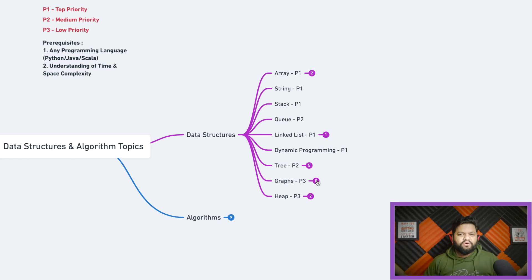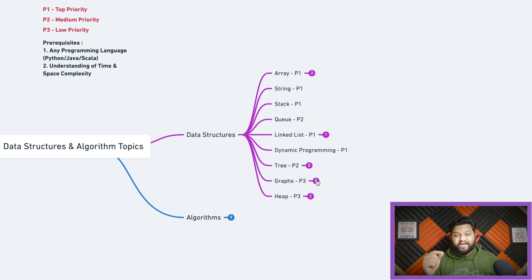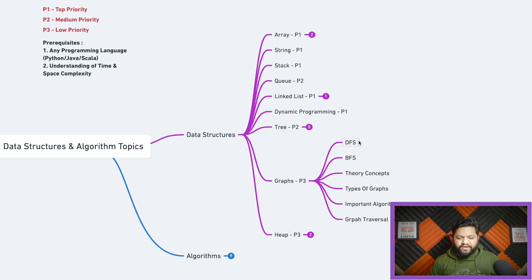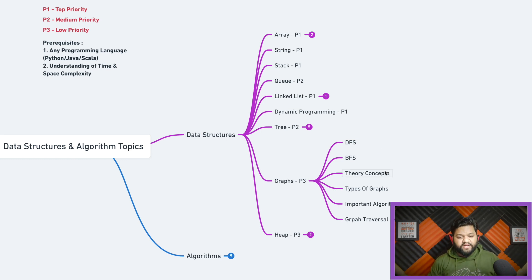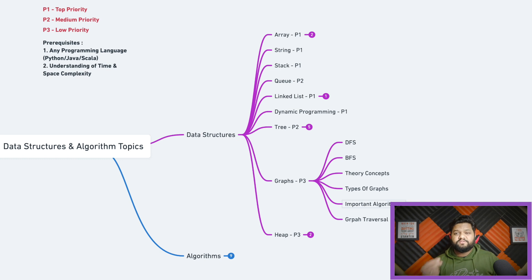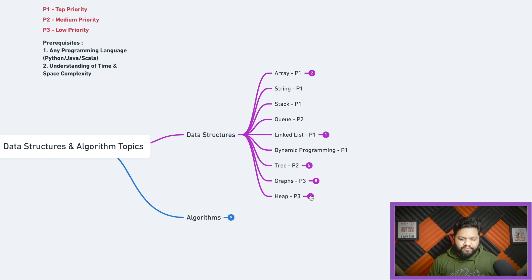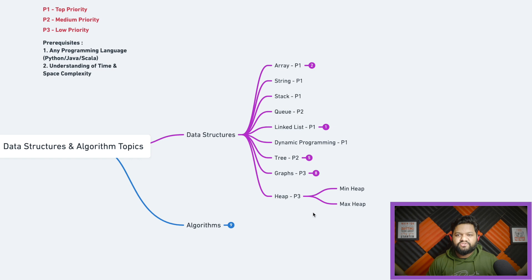The graph section is labeled P3. Honestly, in five years of my data engineering career, I didn't face a single interview question on graphs. For graphs, you should know the theoretical concepts: types of graphs, how they are represented, and important algorithms — Kruskal's, Prim's, and Dijkstra's algorithms are the three I consider really important, along with graph traversal.